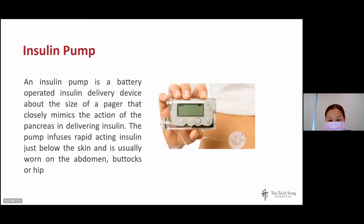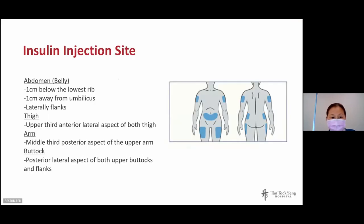An insulin pump is a battery-operated insulin delivery device, about the size of a pager, that closely mimics the action of the pancreas. The pump infuses rapid-acting insulin just below the skin and is usually worn on the abdomen, buttocks, or hip. Regarding injection sites: the belly is the best place for insulin injection because it absorbs insulin most consistently, is easier to access, and is often less painful. Insulin absorption is slower in the thigh than in the belly. You can also inject on the arm and buttocks.